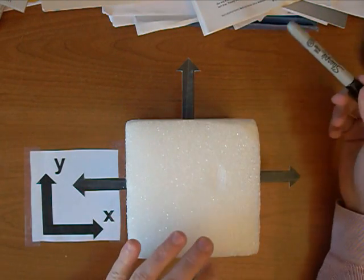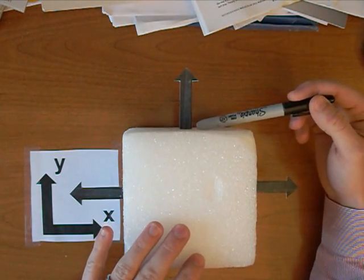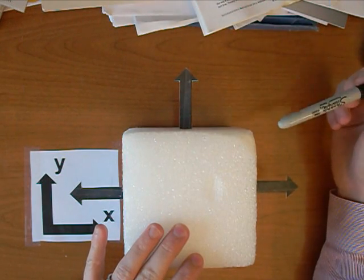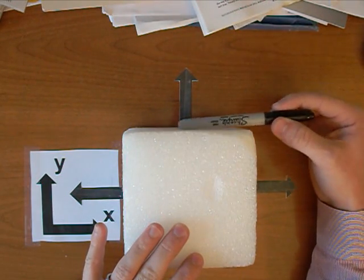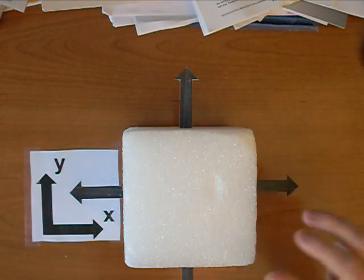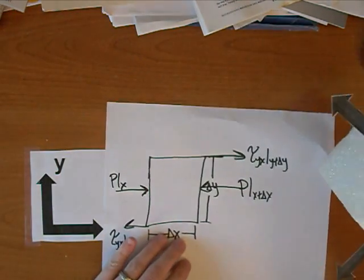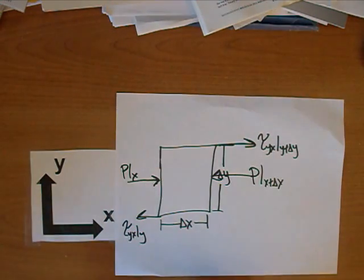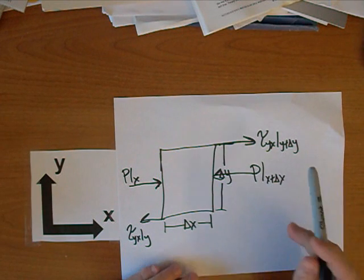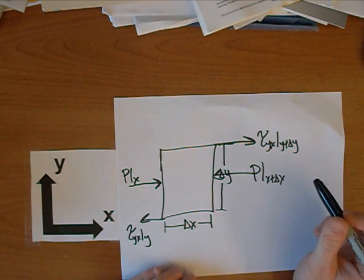And then vice versa on the top face. This top face right here has a unit normal outward pointing in the positive Y direction. So therefore, the shear stress is going to point in the positive X direction back out here. And that's how we get this 2D drawing of our different surface forces on our control volume.